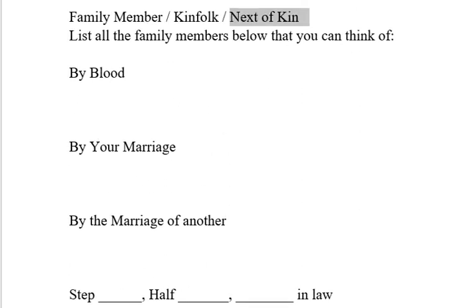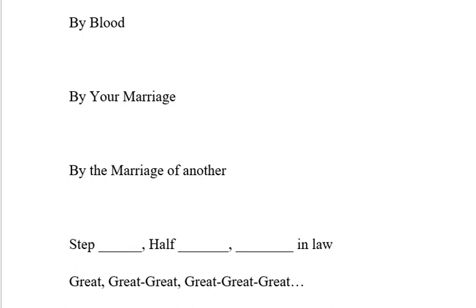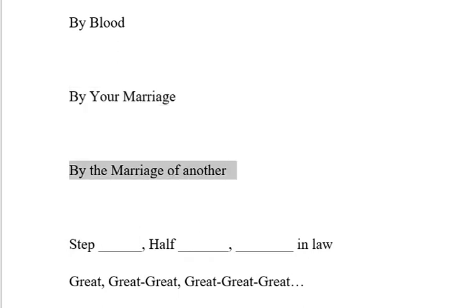If we talk about family by blood — for example, my children are my family by blood. They have some of my blood in their blood. Family by marriage: my wife is family by marriage. My wife's parents, my in-laws, my father-in-law, my mother-in-law are family by marriage. By the marriage of another: if my sister gets married and I now have a brother-in-law, then I am related to him by the marriage of another, not by my own marriage.